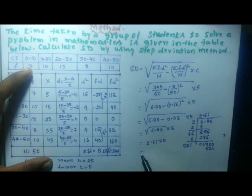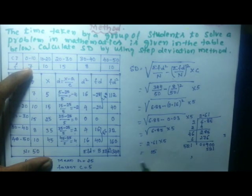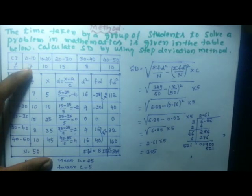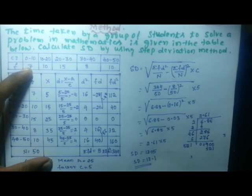Multiplying: 2.61 × 5 = 13.05. So the standard deviation is approximately 13.05, which rounds to 13.1. There is no unit for standard deviation.